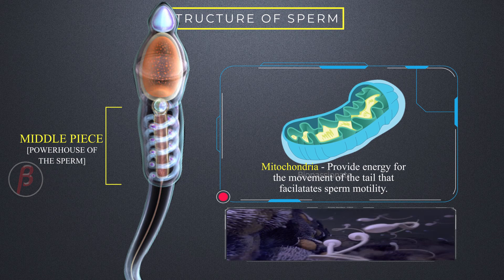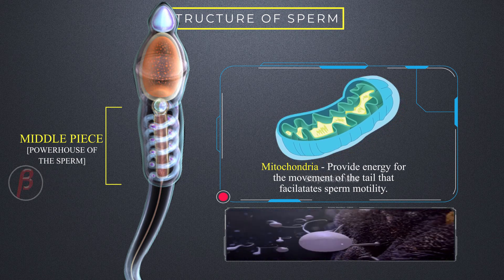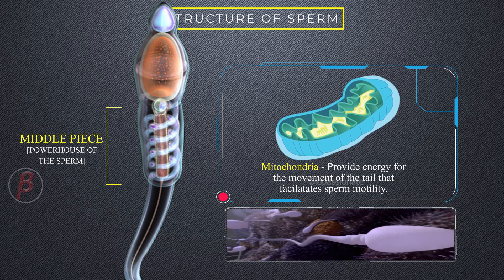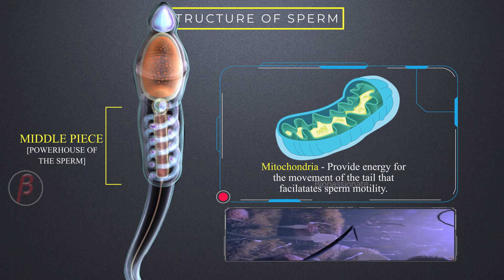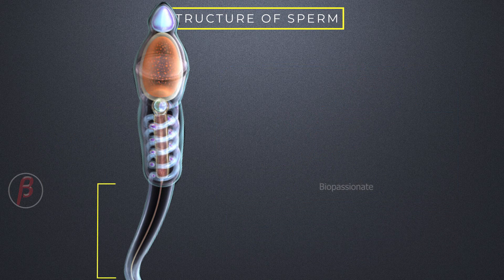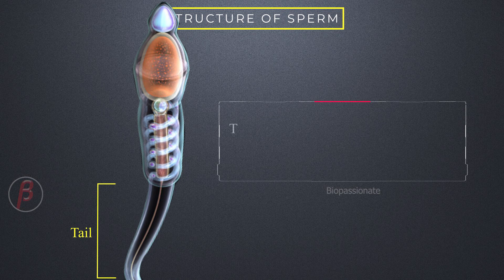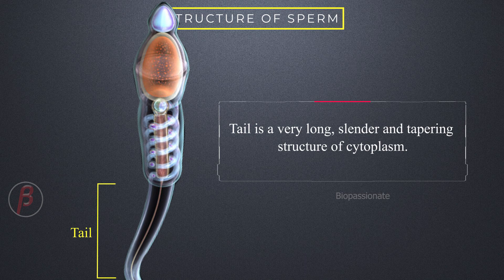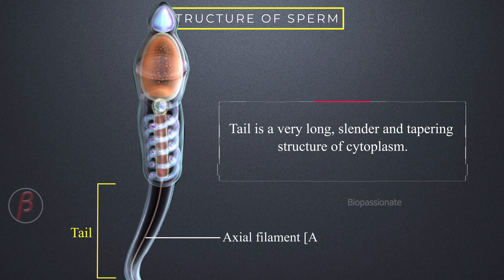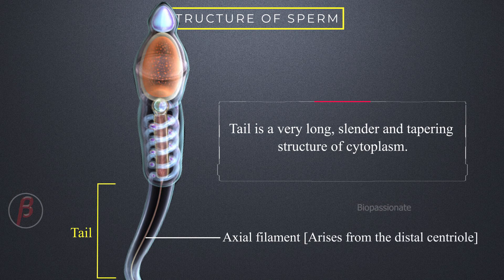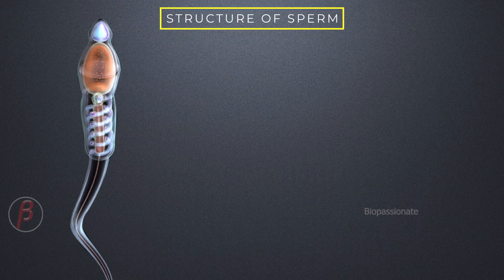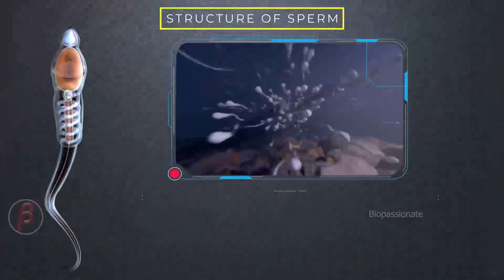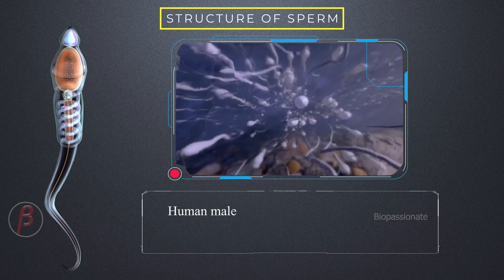The tail is a very long, slender, tapering structure of cytoplasm. The axial filament arises from the distal centriole and passes through the middle piece and tail. Did you know the human male ejaculates about 200 to 300 million sperms during coitus?